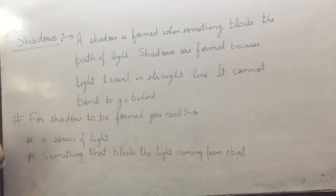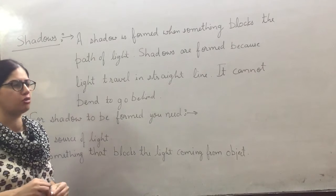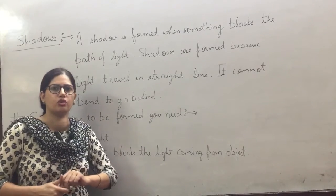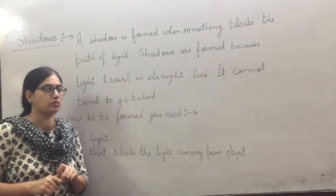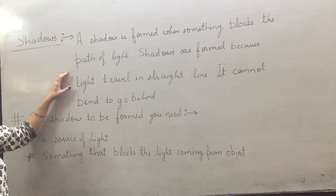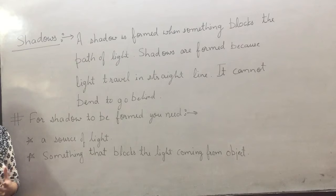All of you know what is a shadow? A shadow is formed when something blocks the path of light. Shadows are formed when something blocks the path of light.